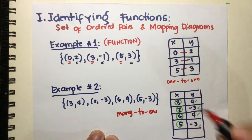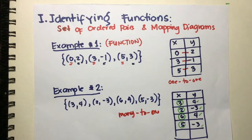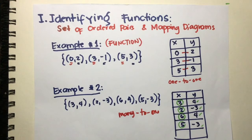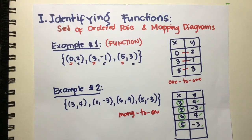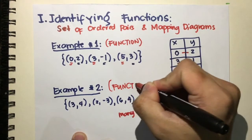This has two x-elements for one y-element, so this type of relation is many-to-one. That means there are more than one x-element for every one y-element. Remember, the restriction is that no one x-element can have multiple y values. You can have many x's with one y, but not one x for many y's. Therefore, this given set is a function since it's many-to-one.